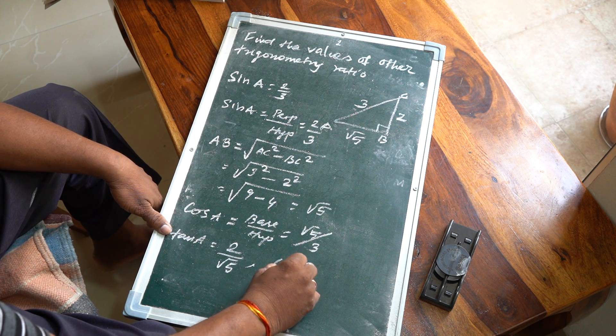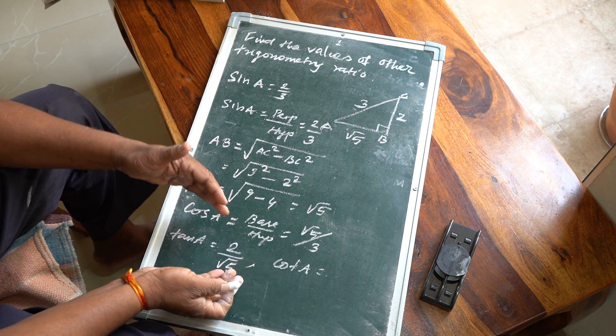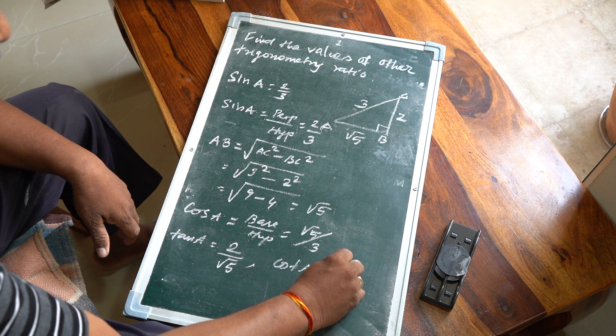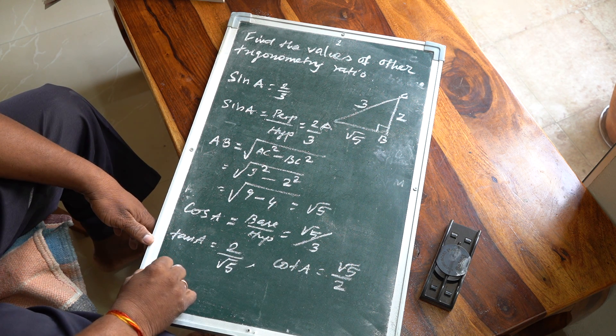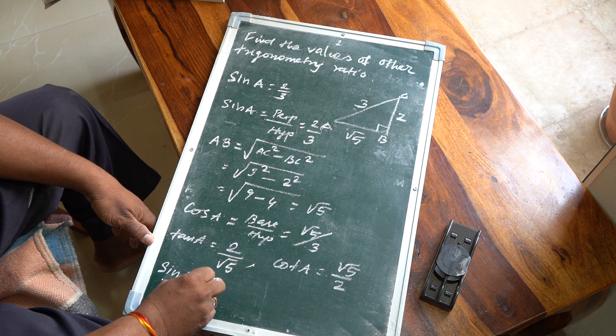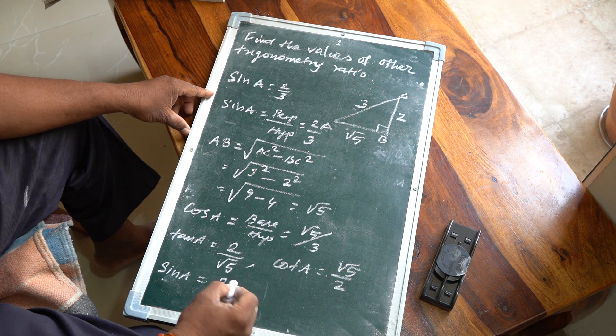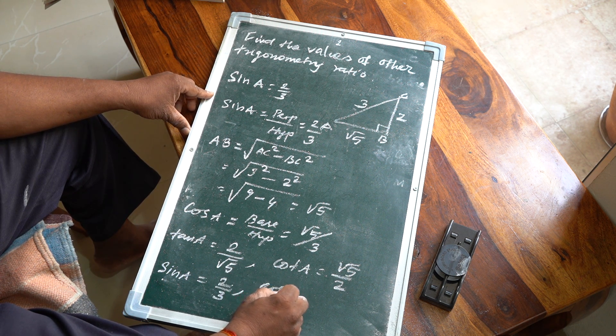You can find cot A, which is just the reciprocal: √5/2. Now sine A is already given as 2/3. So what is cosec A?